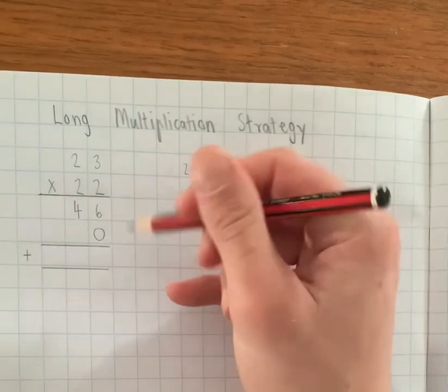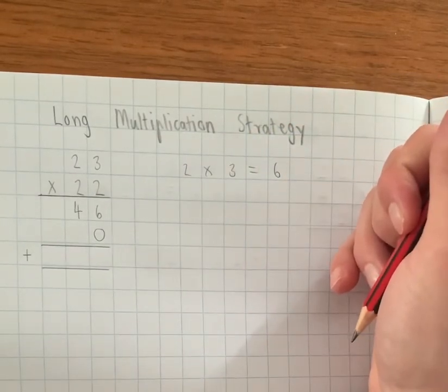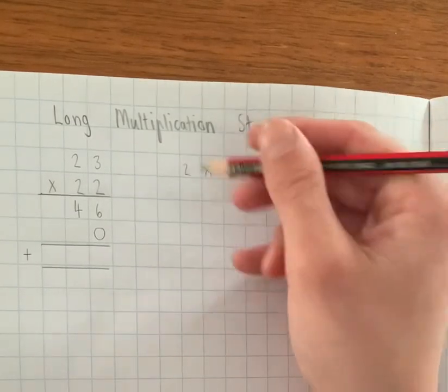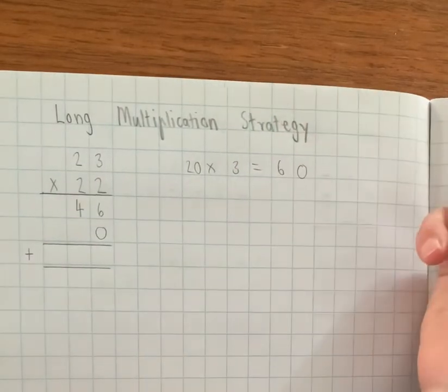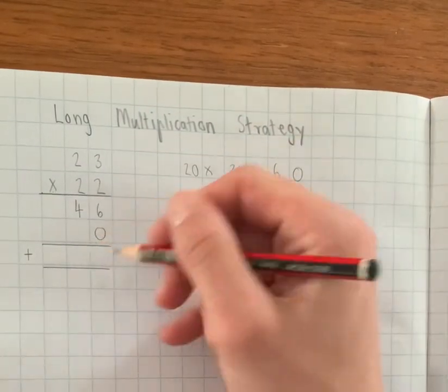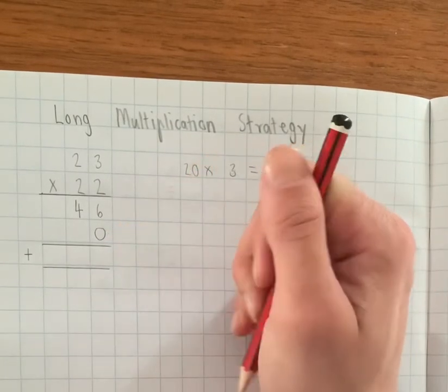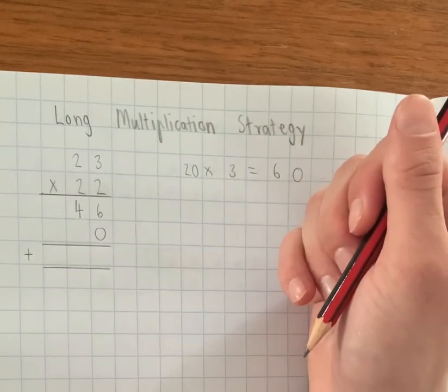But if we just do 2 times 3 like so, we'll end up with 6 and we put a 6 here, then we'll end up with an answer that is much too small to be 23 multiplied by 22. So it is important to remember that this is actually 20 times 3 which is 60, so we have to put that zero in to hold the place. Really important step, probably the most important step because it's the most common mistake that people make.